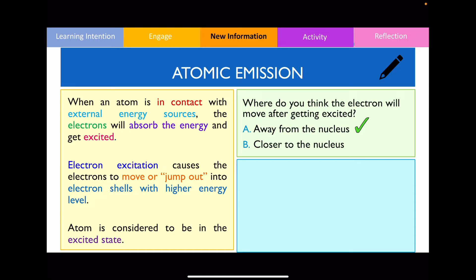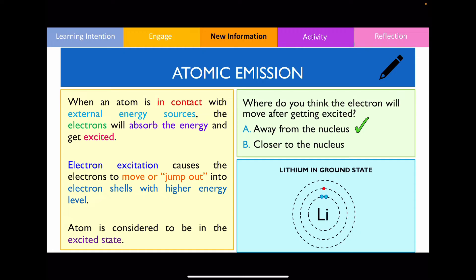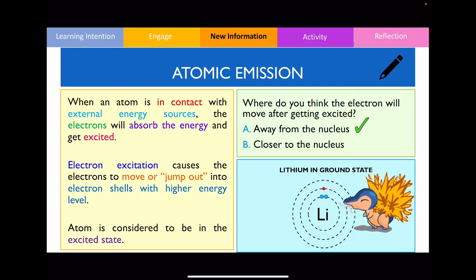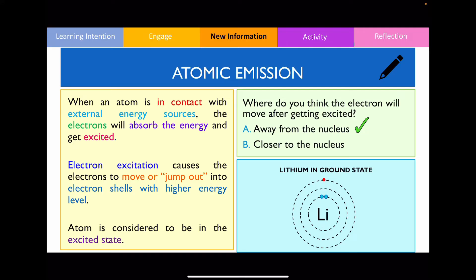Let me show you an example to illustrate what I mean. I've got the Bohr diagram of lithium down below. We know that lithium has an atomic number of three, so it should have three electrons, and this is how it should be arranged. In this arrangement, we consider lithium to be in the ground state — the lowest energy state of lithium. However, if lithium was in contact with a fire source, the electrons in lithium will absorb the energy from the fire and move to a higher energy level as shown here. When an electron has jumped energy levels, we now consider the atom to be in the excited state.